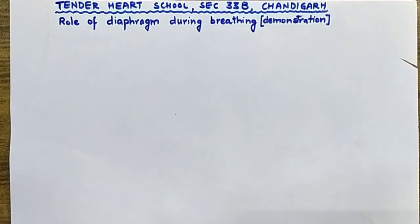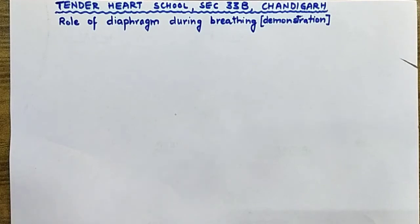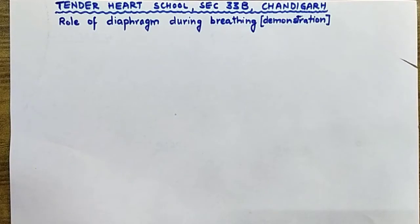Good morning students. Today we will learn the role of diaphragm during breathing. Diaphragm, as you know, is a muscular sheet which separates the respiratory organs from the abdominal organs — that is the digestive organs. It is present below the lungs. Diaphragm is dome shaped in normal condition. When we inhale air, the diaphragm becomes flat and straight, helping the lungs to increase in size and become inflated.